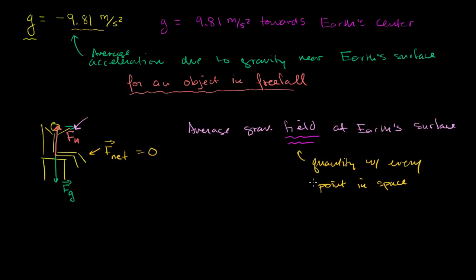It can actually be a scalar quantity, in which case you'd call it a scalar field — it would just be a value. Or it could be a vector quantity — a magnitude and a direction associated with every point in space — in which case you're dealing with a vector field. Near Earth's surface, if you give me a mass — say 10 kilograms — you can use g to figure out the actual force of gravity on that object at that point in space.